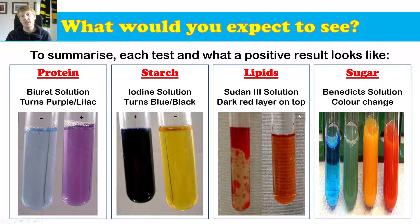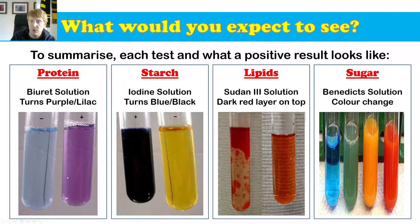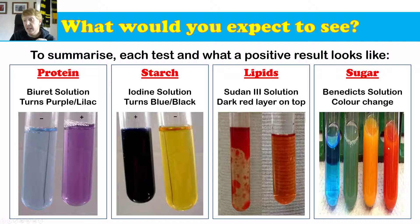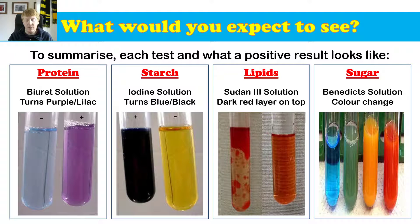To summarise — what would you expect to see? Protein: Biuret solution turns lilac, meaning proteins are present. Starch: iodine solution turns blue-black if starch is present. Lipids: Sudan 3 solution — dark red layers mean lipids are present. And lucky last, sugar: Benedict's solution, heat it up, and a colour change to green, orange, or red means sugars are present. Alright guys, thank you very much. Have a good one.